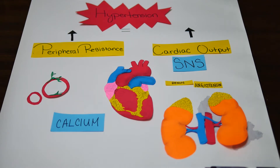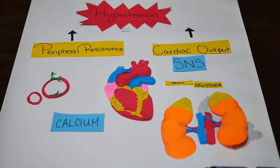In summary, if peripheral resistance or cardiac output are increased — together or individually — over an extended period of time, hypertension may occur. Baroreceptors play a key role in homeostasis by sending action potentials to the brain. In terms of cell membrane, excess calcium increases cardiac output and peripheral resistance. The renin-angiotensin system involves the use of proteins, which leads to water and sodium retention.